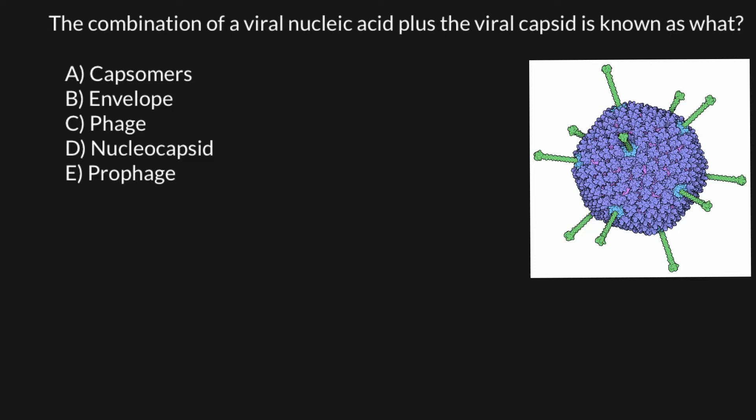Answer B: Envelope. We would see this sometimes around the capsid. This is a double lipid layer that is usually acquired by the virus when the virus leaves a cell. The cell would die and the virus would take the lipid layer of the original cell along with many proteins associated with that cell.